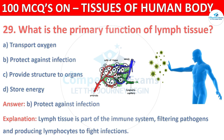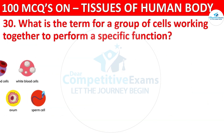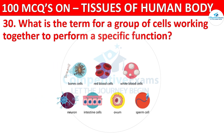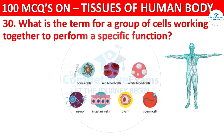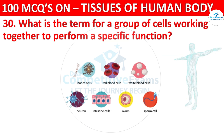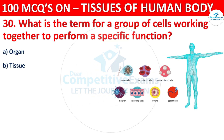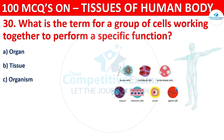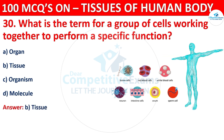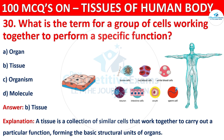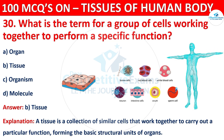Q30. What is the term for a group of cells working together to perform a specific function? The correct answer is B, i.e. Tissue. A tissue is a collection of similar cells that work together to carry out a particular function, forming the basic structural units of organs.